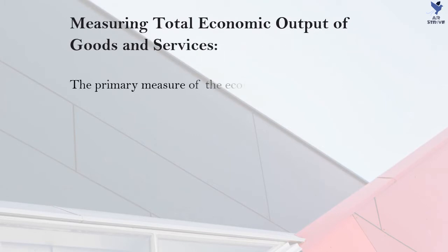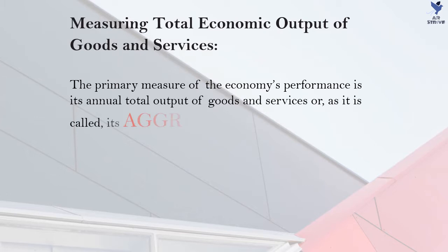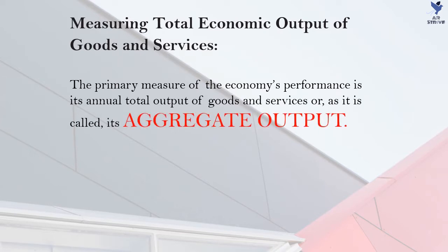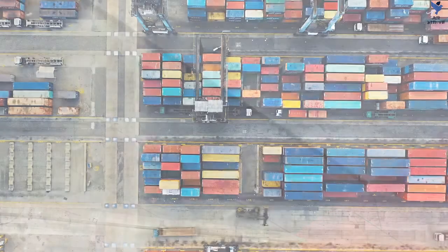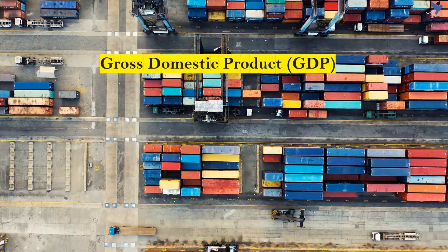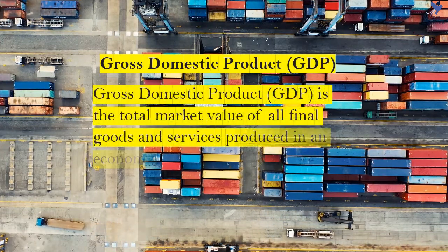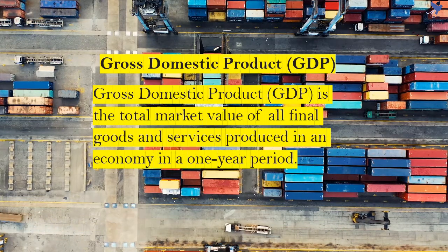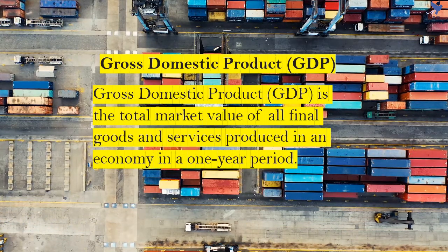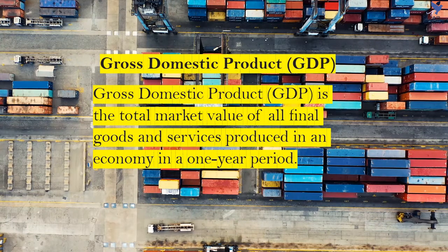The primary measure of the economy's performance is its annual total output of goods and services, or what is called the aggregate output. There are several ways to measure the aggregate output depending on how one wishes to define the economy. One of the most important measures of calculating the aggregate output is gross domestic product. Gross domestic product is the value of all final goods and services produced within the boundaries of a country in a given time period.